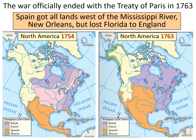Spain received all the lands west of the Mississippi River and New Orleans, but lost Florida to England. Later on, Spain wasn't supposed to give any of this land back to France, but they ended up doing it — it's complicated. For now, Spain owned that western territory.